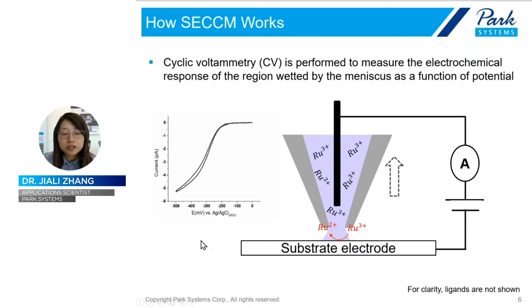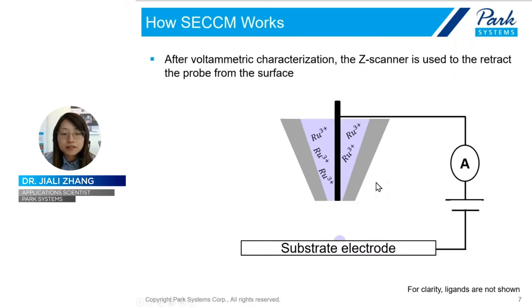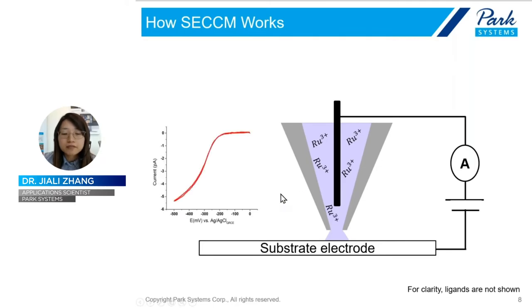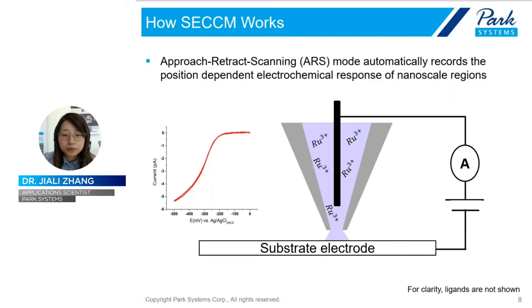After acquiring the first voltammogram, the Z scanner retracts several micrometers above its first approach position. The XY scanner then moves horizontally to a predetermined location, and the Z scanner again lowers until a meniscus forms on the surface. A second CV curve is then obtained, and the process is repeated across the preset scanning area. This is what we call approach-retract scanning mode, or ARS mode. Users can easily record the position-dependent response of nanoscale regions for heterogeneous surfaces or surfaces with nanostructures.